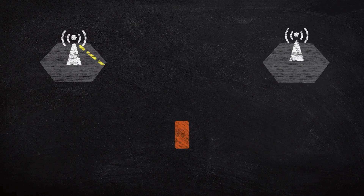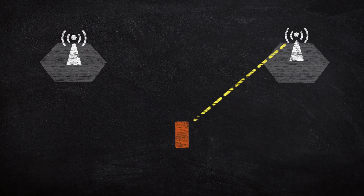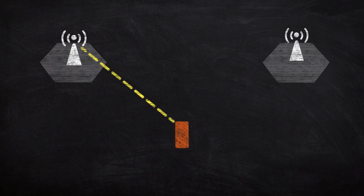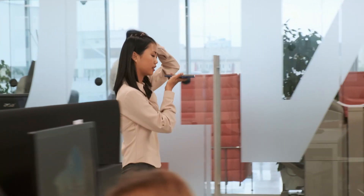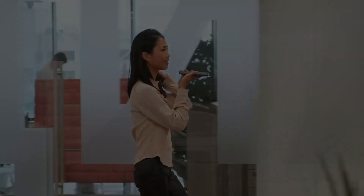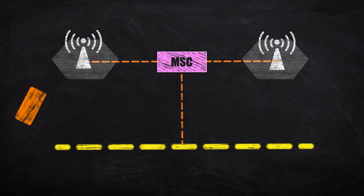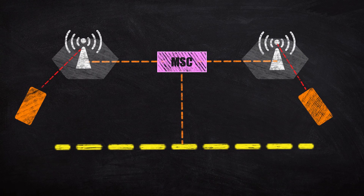Other than frequency reuse, a cell tower — with the exception of those from the first generation — can hand connections off to another tower without service interruptions, which provides users with an even greater range of mobility. So there you have it: the cellular network consists of interconnecting cell towers, which use modulated wireless signals to connect mobile devices.